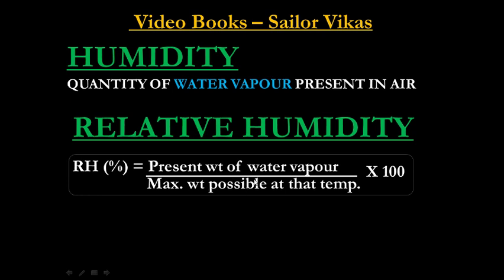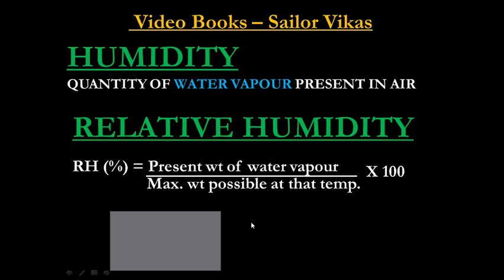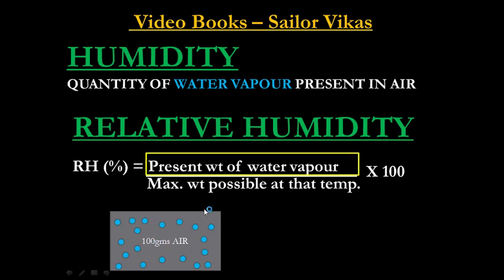Let me take a compartment and put 100 grams of air in it. As you know, if it has 100 grams of air, there might be some amount of water vapor present. At this present time, whatever the total weight of all this water vapor is — that is the numerator, which is the present weight of water vapor.